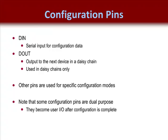Other important configuration pins are the data in pin, which is used to load in the serial configuration data. The data out pin is used to output the bitstream to the next device in case the user has built a daisy chain into the FPGA system. A daisy chain is used to save PROMs or other memory components. It allows the user to store the bitstreams of multiple FPGAs in one memory component. The configuration scheme has to be configured to pass the data through each FPGA once it has been programmed.